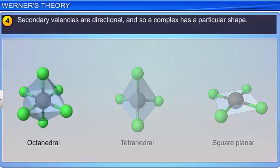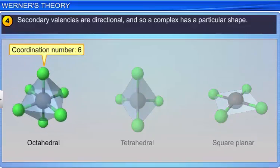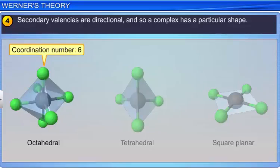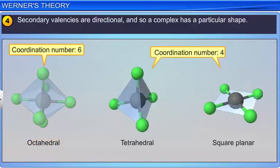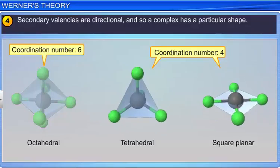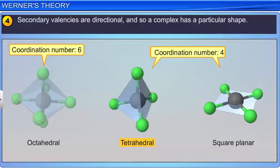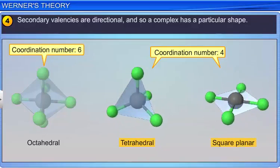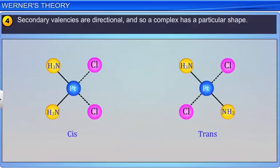The most common coordination number in transition metal complexes is 6, and the shape is usually octahedral. The coordination number 4 is also common and gives rise to either tetrahedral or square planar complexes. This postulate predicted the existence of isomerism in coordination compounds.